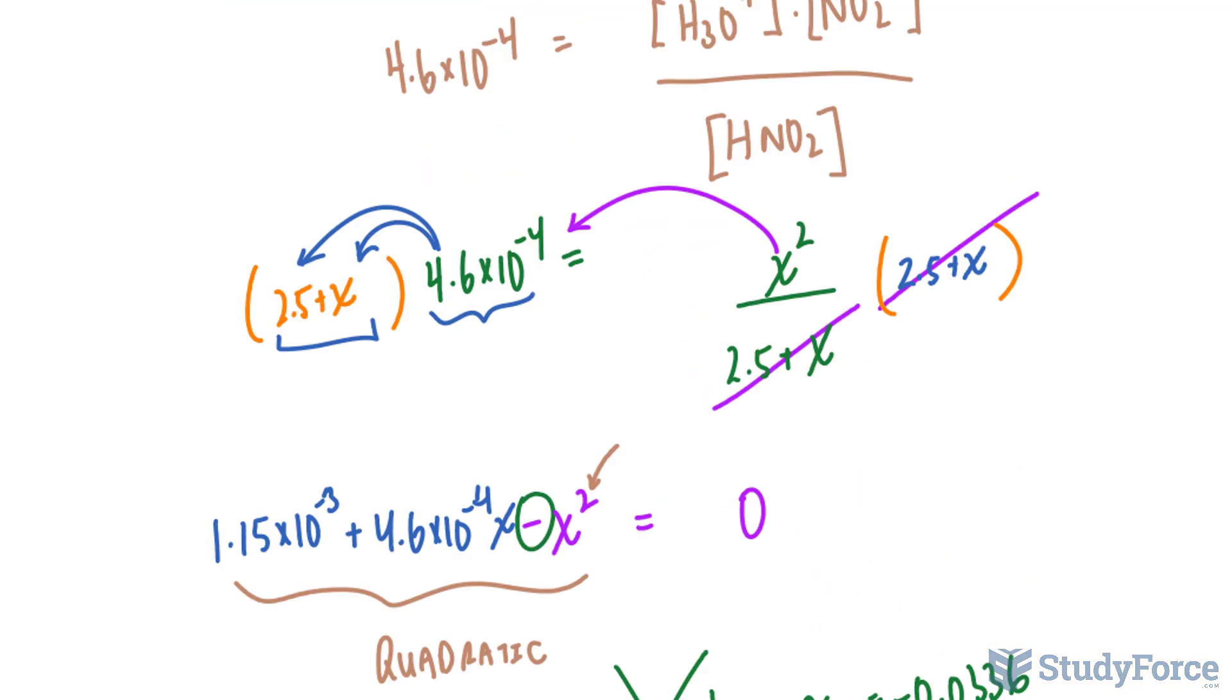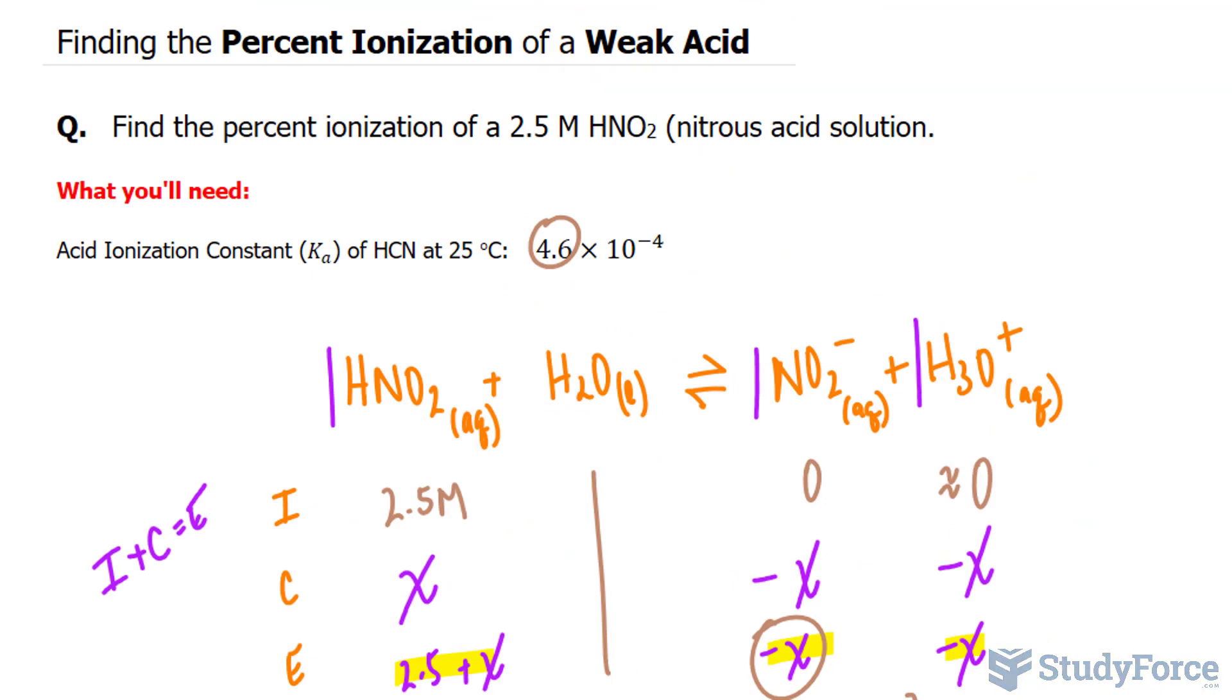And there you have it. That is how to find the percent ionization of a weak acid.